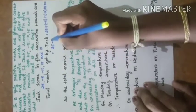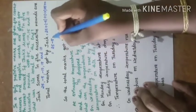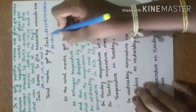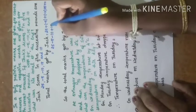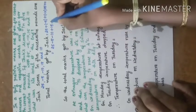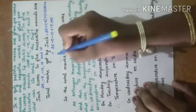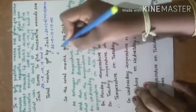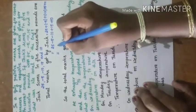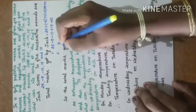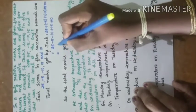So: 25 minus 5 minus 10 plus 15 plus 10 equals 35. The total marks got by Jack was 35.